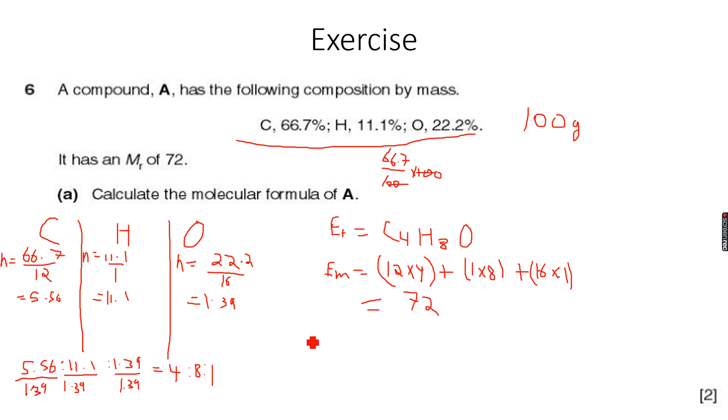Now what we do is divide the molecular mass by the empirical mass. In this case, it is 72 over 72, because they have given us the molecular mass as 72 and the empirical mass is also 72. So this is equal to 1.